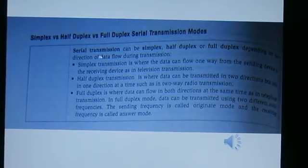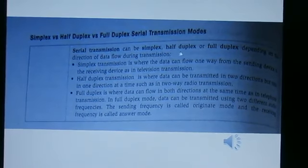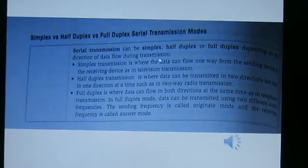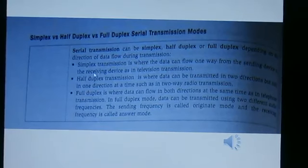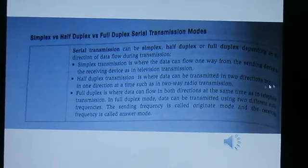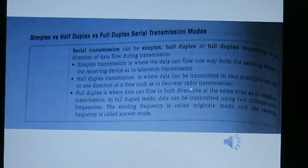Serial transmission can be simplex, half-duplex, or full-duplex, depending on the direction of data flow during transmission. Simplex transmission is where the data can flow only from the sending device to the receiving device, as in television transmission. Half-duplex transmission is where data can be transmitted in two directions, but only in one direction at a time, such as in two-way radio transmission.